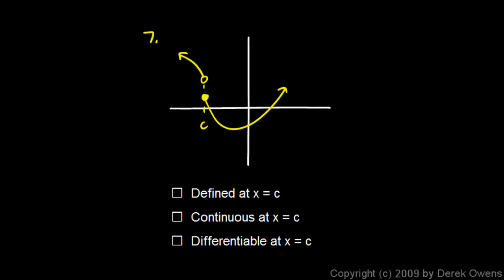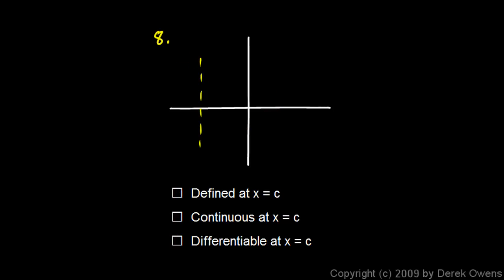Number seven: point C is on the graph where the function has a y-value, but there is a discontinuity elsewhere. At point C the graph does have a value, but it's not continuous, so you can't find a derivative at that point. Number eight has a vertical asymptote, a discontinuity, and a cusp — but point C is near the cusp, not at it. At point C the function is defined, continuous, and smooth, so it is differentiable at point C.